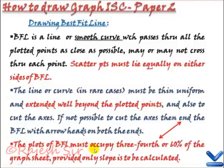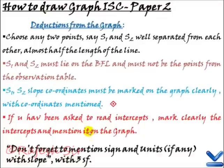As I told you, the plots of best fit line must occupy the three-fourth or sixty percent of the graph shade provided the slope is to be calculated. If intercepts are to be calculated, origin has to be zero comma zero and this then in that situation is no longer required sixty percent rule.